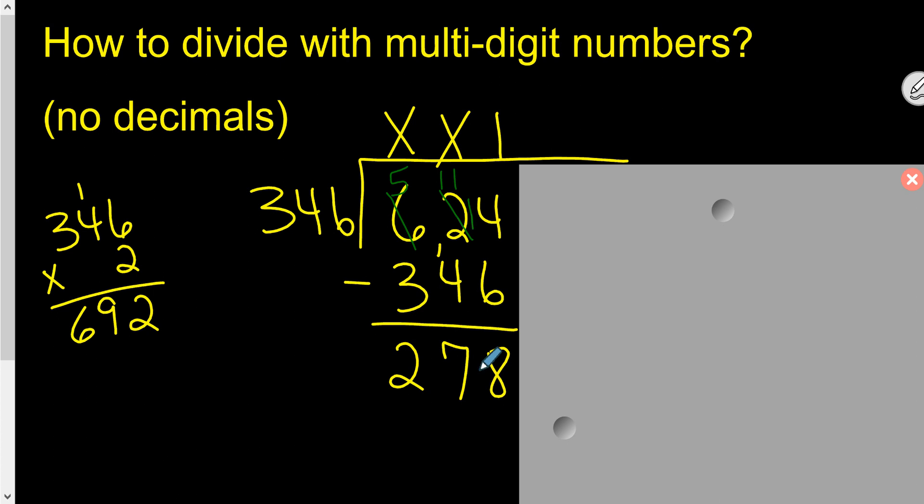We're not done yet. I just want to point this out. This number, whatever you have left over, it better be less than this outside number. It has to be less than that. If it's not less than that, then you should have gone in another time at least. You should have put a bigger number into it.